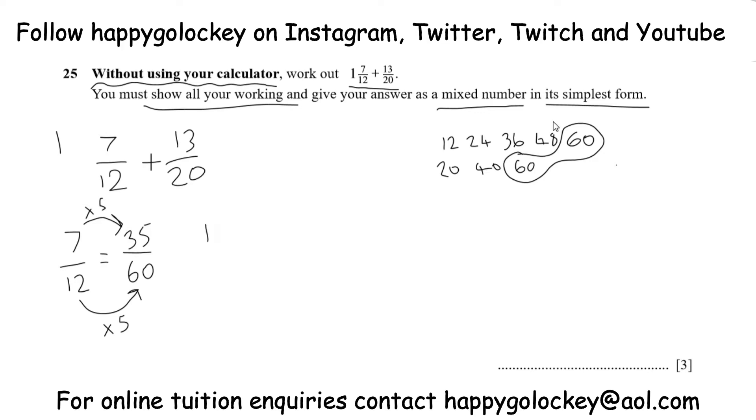And then we have to turn 13 twentieths into 60ths as well. And how many 20s do you need to make 60? 3. So we need 3 of the top, the numerator. That's 39 60ths.